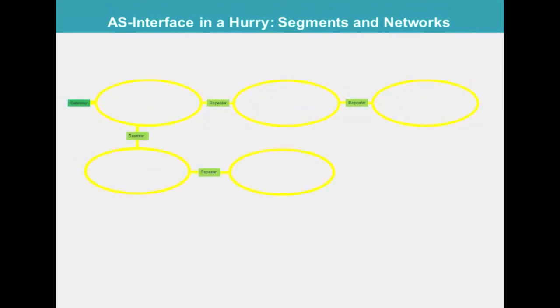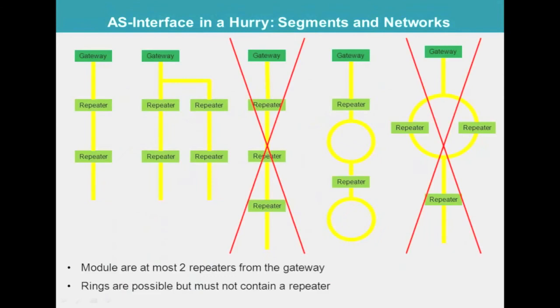Applying the no module must be more than two repeaters from the gateway rule results in a network with up to 1000 meter total length. Placing the repeater inside the ring, as shown here, is not allowed. In summary, here are the possible and forbidden networks, as well as the rules to remember.